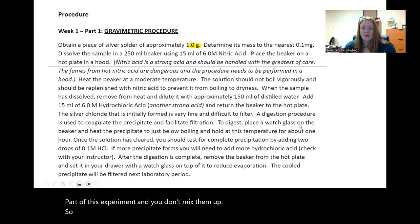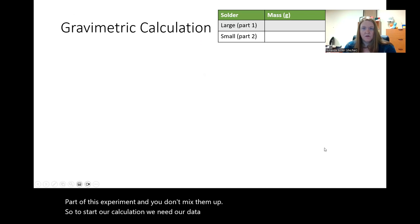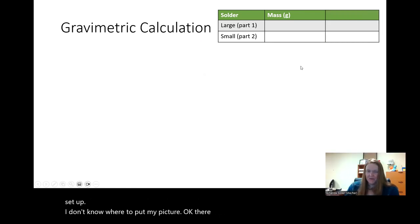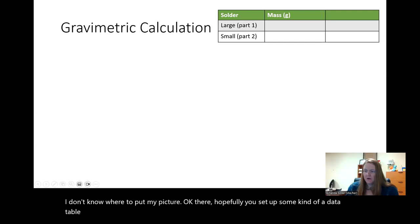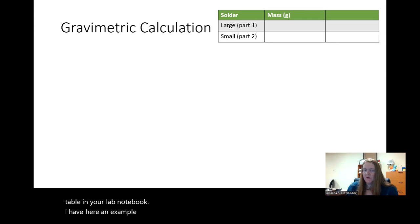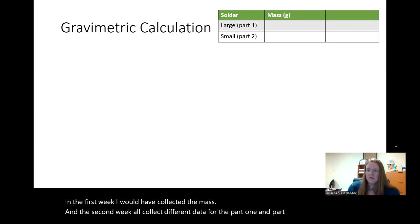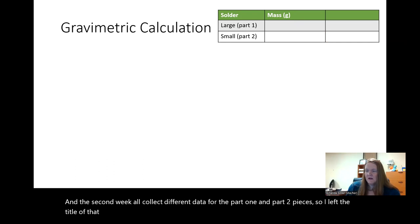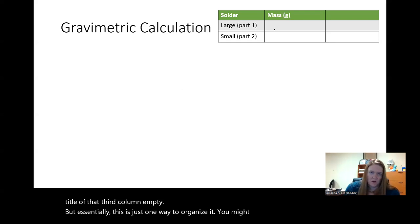So to start our calculation, we need our data from lab. And so at this point, hopefully you set up some kind of a data table in your lab notebook. I have here an example where in the first week, I would have collected the mass. And the second week, I'll collect different data for the part one and part two pieces. So I left the title of that third column empty. But essentially, this is just one way to organize it. You might find a somewhat different way and that's okay.